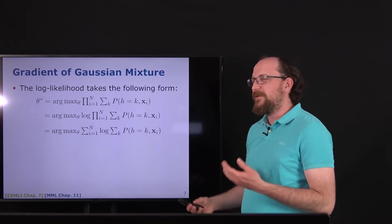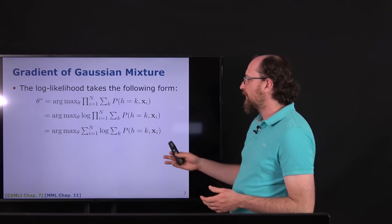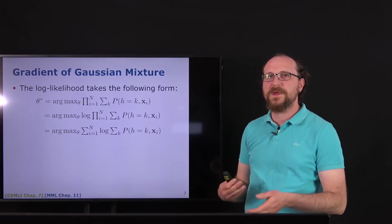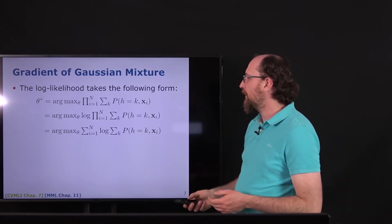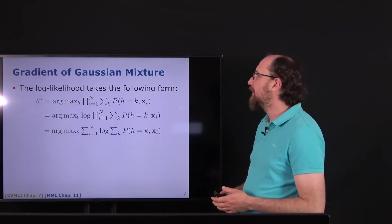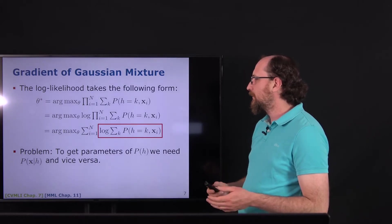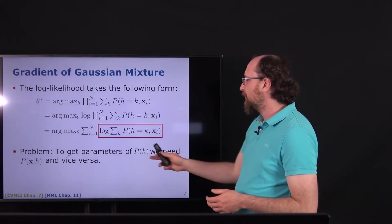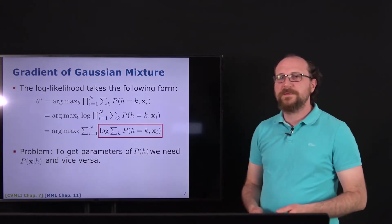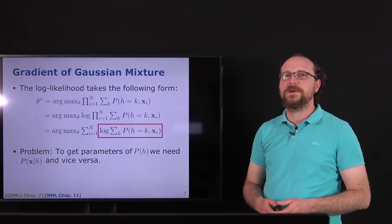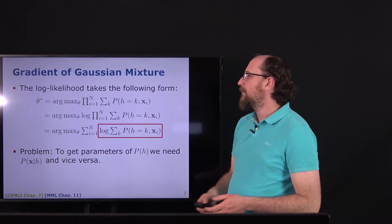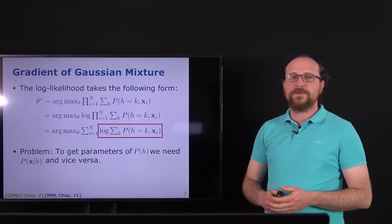Because of the logarithm in front of the sum, we cannot pull it inside — we cannot make the parameters of h and x independent from each other. Therefore the gradient would be more complicated to get the parameters of p(h) and p(x|h). But we can instead optimize a lower bound, and the method used is called Expectation Maximization.